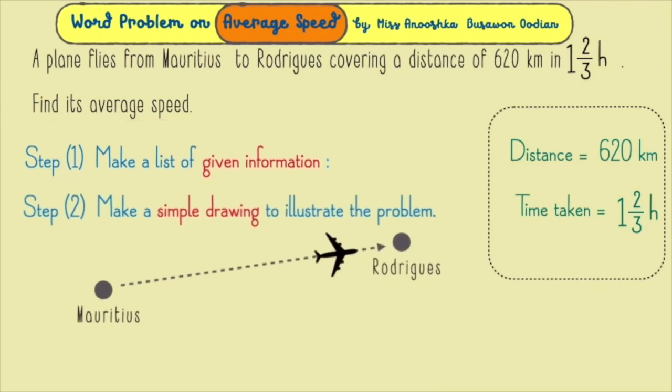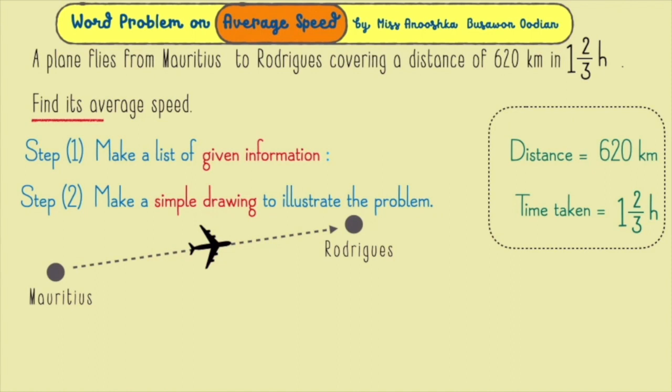Now it's time to look for the average speed of the plane. To find the average speed, we need to divide the total distance covered by the total time taken.